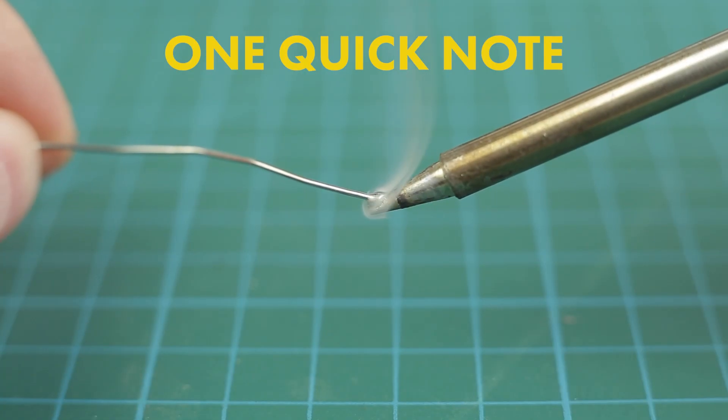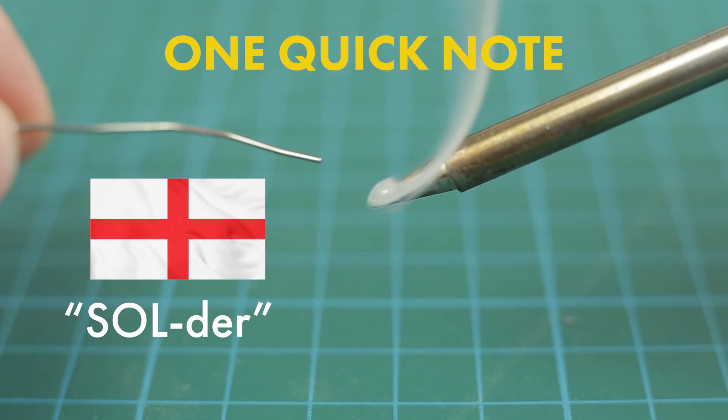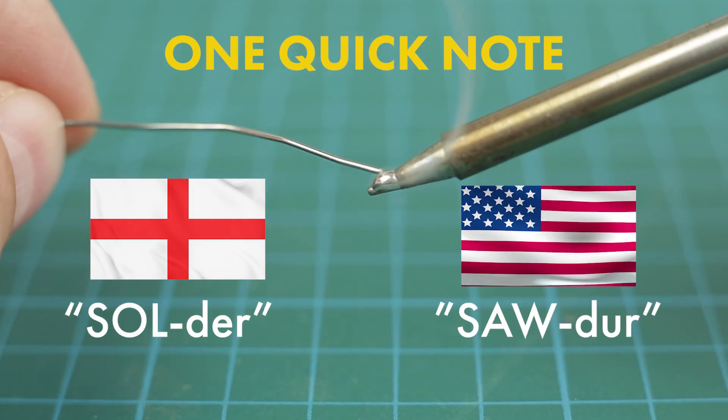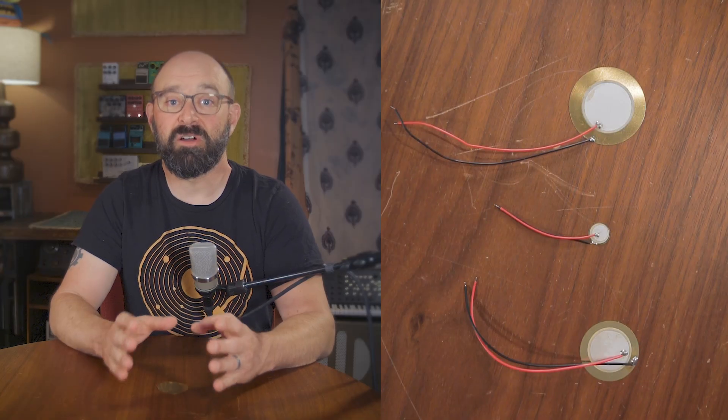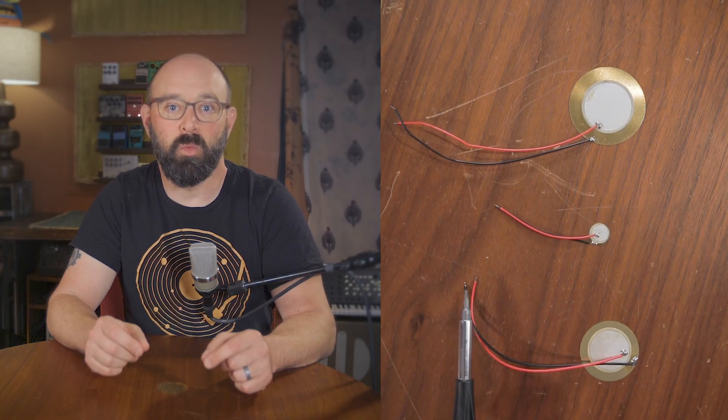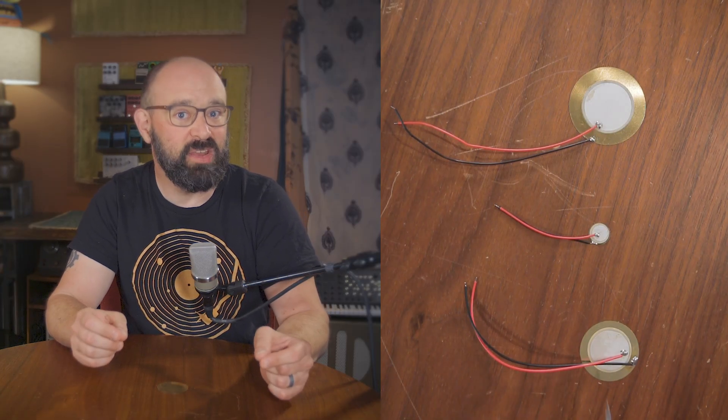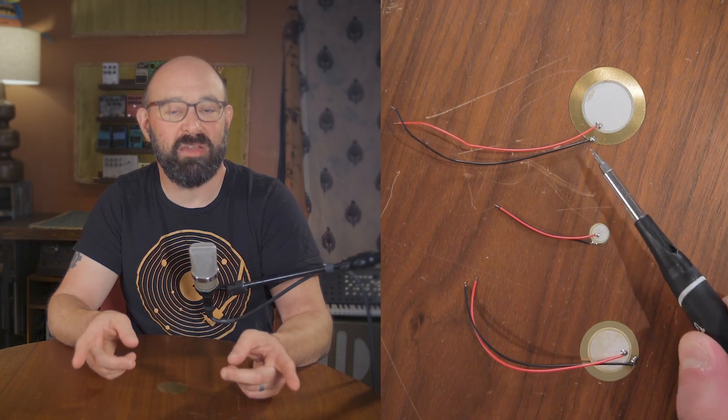One quick note before we continue. In England, we say solder. In America, we say solder. Now some of these discs will come with the wires already soldered on. And that's helpful if you don't feel like soldering them onto the disc itself. But you're going to want to solder a bit more wire onto those wires anyway, in order to make that length of cable usable.